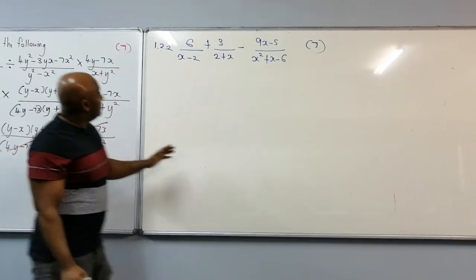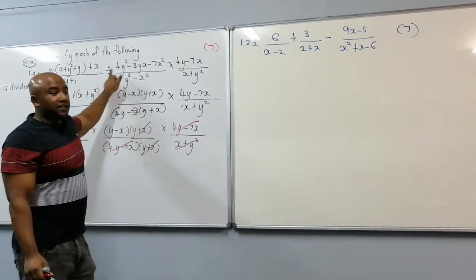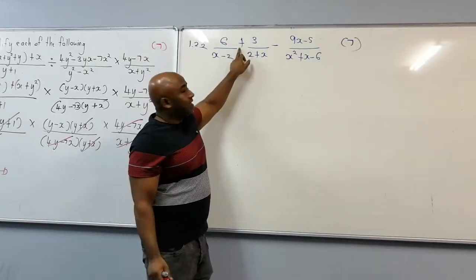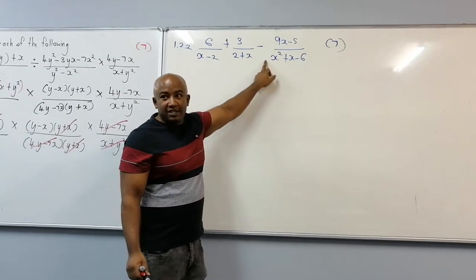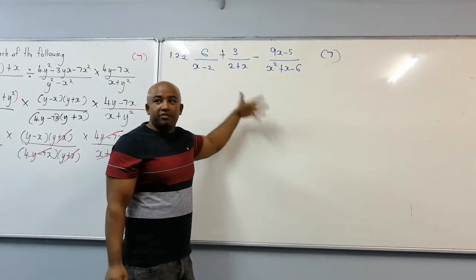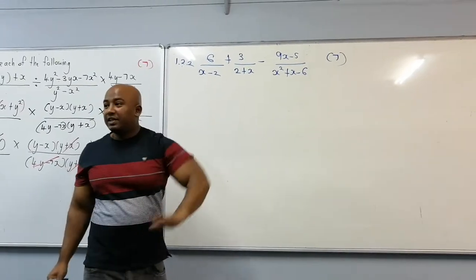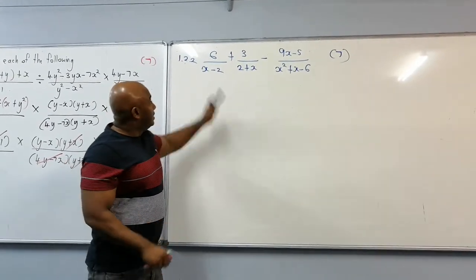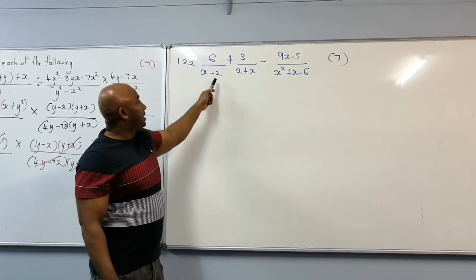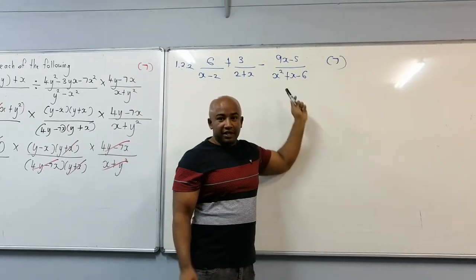The previous question involved dividing and multiplying fractions. This one involves adding and subtracting fractions, which is normally the more difficult one because you have to find the LCD. So what do we do? We try and factorize everything first. This is already x minus 2, nothing to do here — x plus 2. This is what we need to factorize.